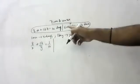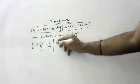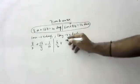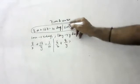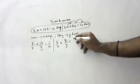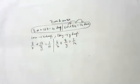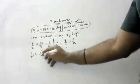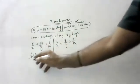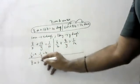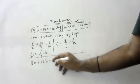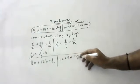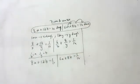Again: one man does 1/x, so 6 men do 6/x. One boy does 1/y, so 8 boys do 8/y. Together they complete 1/14 of the work in one day. Now we substitute: let 1/x = a and 1/y = b. The equations become: 8a + 12b = 1/10, and 6a + 8b = 1/14.